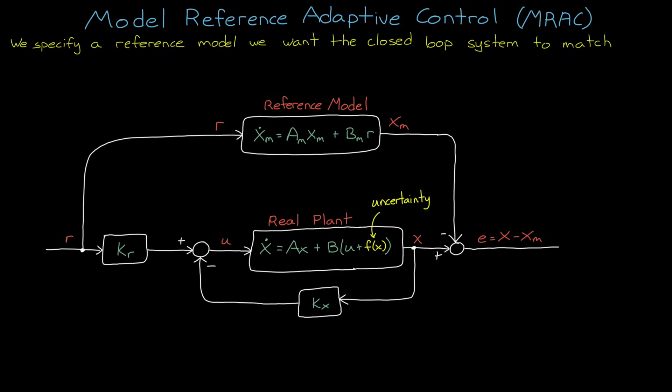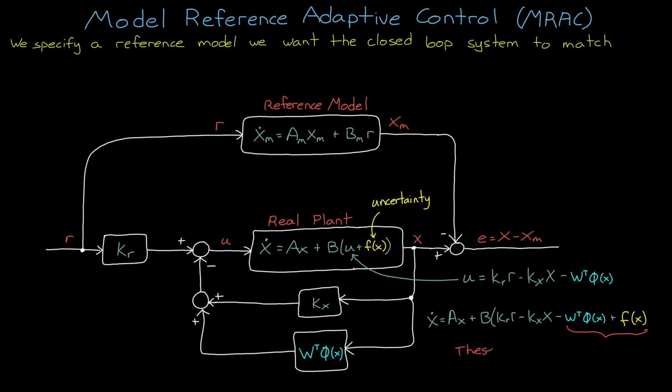Except maybe we aren't because we can try to do something about it. If we can cancel out that uncertainty, then we'll be left once again with our nominal model, and our model matching conditions will still hold. So to cancel F of X, we can feed back another term, W transpose times phi, where W is a vector of adaptive control weights, and phi is a set of uncertainty model features. But for now, if W transpose times phi perfectly matches F of X, then these two terms will cancel out and we'll just be left with the nominal model of the system.